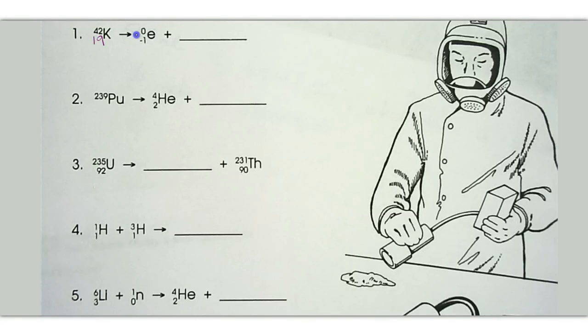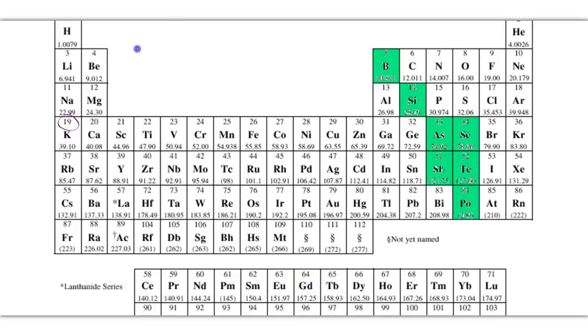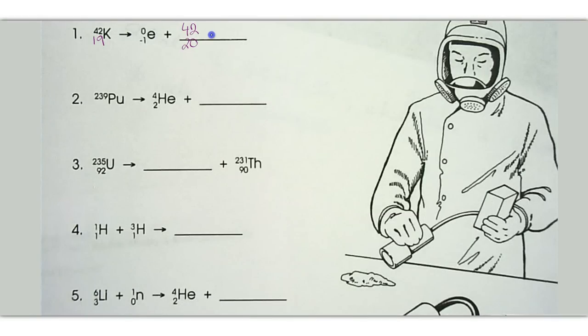And then on the right-hand side, 42 minus 0 is going to give us a 42. 19 minus a negative 1 or 19 plus 1 is going to give us 20. You can check your work because 20 minus 1 should equal 19. And it does. Now we need to know what is element number 20. When we look here, element number 20 is calcium. So our symbol is going to be calcium.